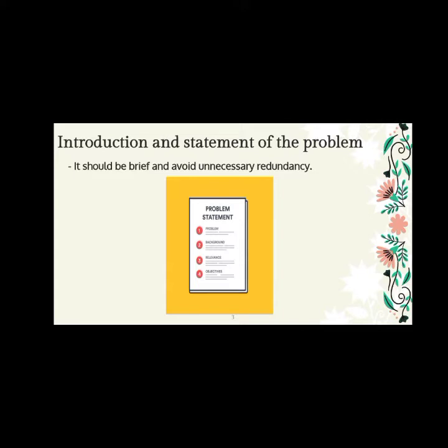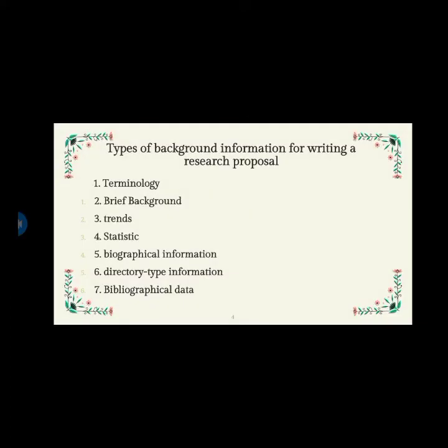The first section of the typical proposal, if there is not a separate problem section, introduces the problem to be studied and provides a brief historical background for the problem where appropriate. If the problem warrants being divided into subproblems, they are identified at this point. This section should indicate the importance of the proposed study — why a solution is needed — and identify anticipated benefits and their significance. Common sources of such information in library and information science include terminology, brief background, trends, statistics, biographical information, and directory-type information.